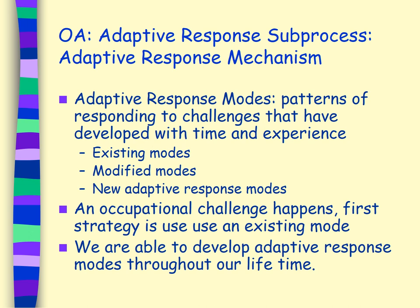The second part of the adaptive response mechanism is adaptive response modes — these are patterns of responding to challenges that have developed with time and experience. We all have existing modes, things that already exist in place — tying shoes comes pretty much automatic to us. We also have modified modes, where we may be doing something and have to modify it in a given time. Making a grilled cheese sandwich and burning one side — I turn the heat down, flip the sandwich over — I'm modifying something. I know how to make a grilled cheese sandwich, but when I'm burning it, I need to modify that mode.